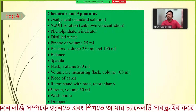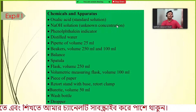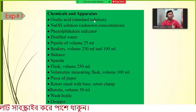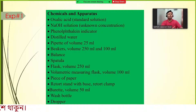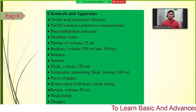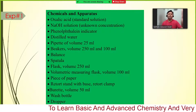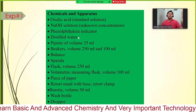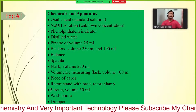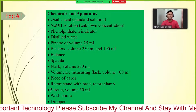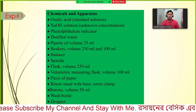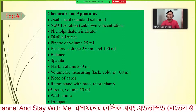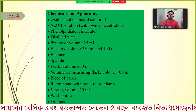The chemicals and apparatus needed are: oxalic acid (standard solution, known concentration), sodium hydroxide solution (unknown concentration), phenolphthalein indicator, and distilled water. Distilled water is used because it contains no ions — very little H⁺ or OH⁻ — so when we dissolve an acid or base, we get the exact amount of ions from that substance alone.